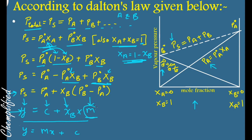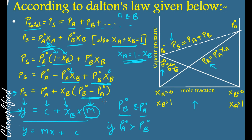The slope can be positive or negative depending on the values of P°_B and P°_A. If P°_B is greater than P°_A, the bracket value is positive and the graph has a positive slope. If P°_A is greater than P°_B, the values in the bracket are negative and the slope becomes negative. So the value of slope m is decided by comparing P°_B and P°_A.